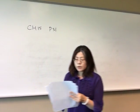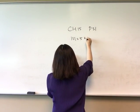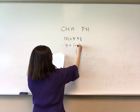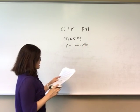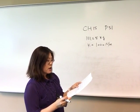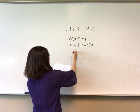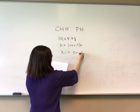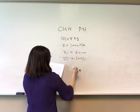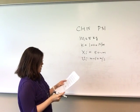We're going to do problem 31 from chapter 15. A 5-kilogram object on a horizontal frictionless surface is attached to a spring with a spring constant of 1000 newtons per meter. The object is displaced from equilibrium 50 centimeters horizontally and given an initial velocity of 10 meters per second back toward the equilibrium position. So the initial displacement is 50 centimeters and the initial velocity is 10 meters per second toward equilibrium.